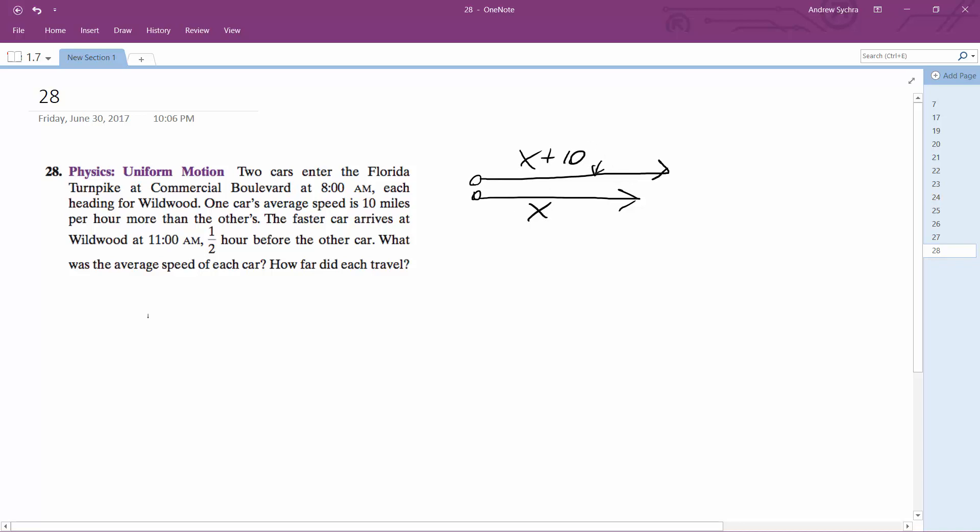This car gets to the location in three hours, so 8 to 11 a.m., and then this car gets there in three and a half hours. So what this ends up becoming is three times X plus 10 is equal to 3.5X.